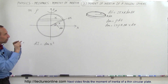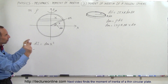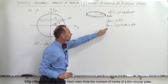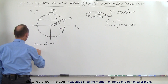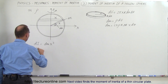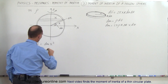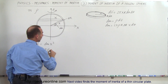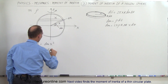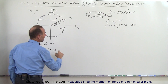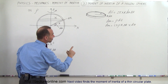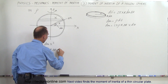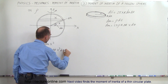The moment of inertia of just a little disc is dI = dm × x². Since dm equals 2π rho r delta r x d theta, we get dI = 2π rho r delta r × x³ d theta.